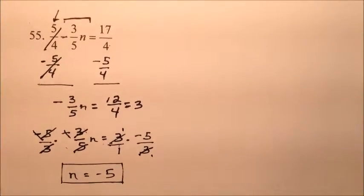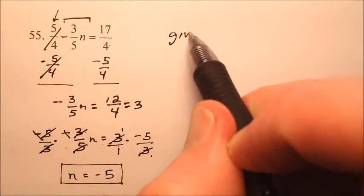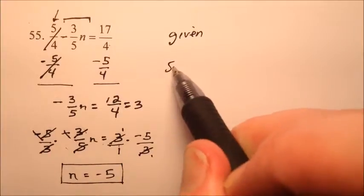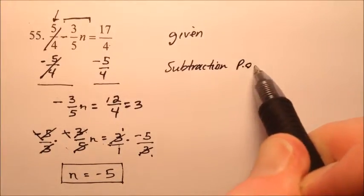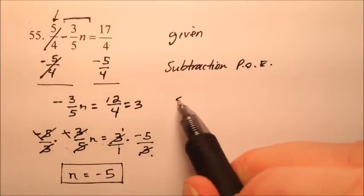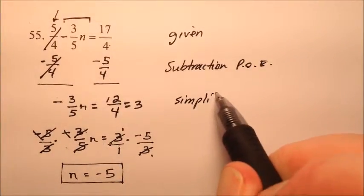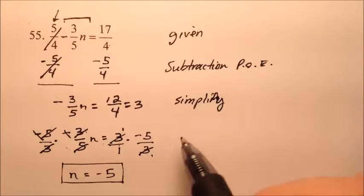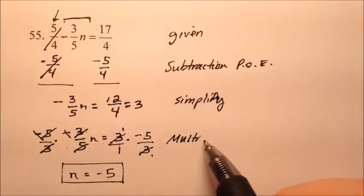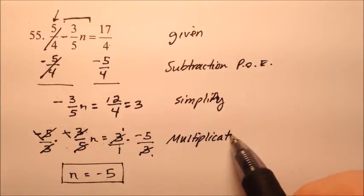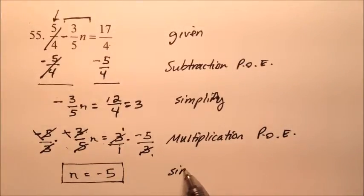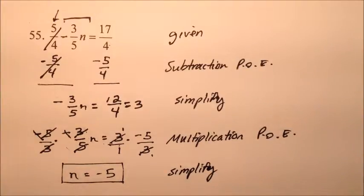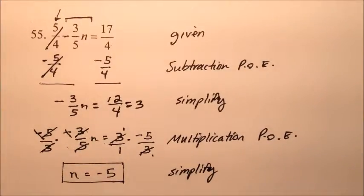Let's write our steps: given, subtraction property of equality, simplify, multiplication property of equality, simplify. The solution for number 55 is negative 5.